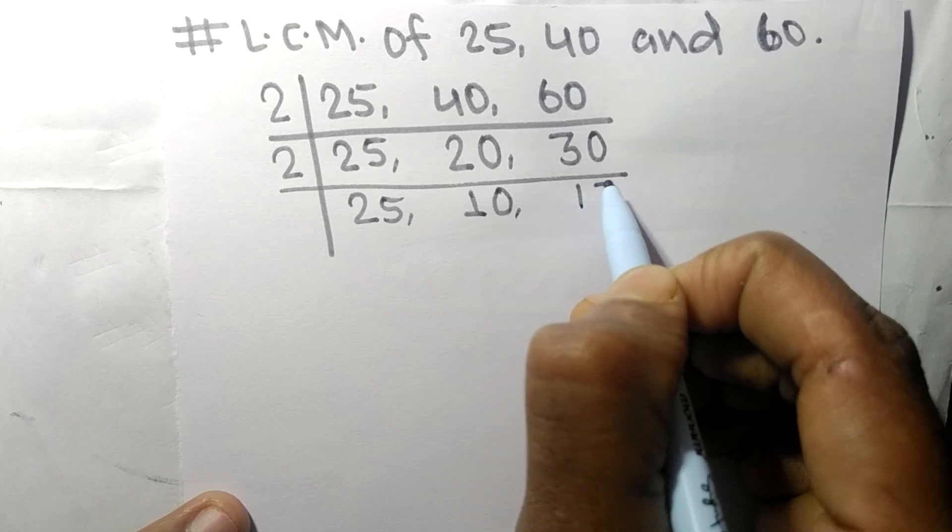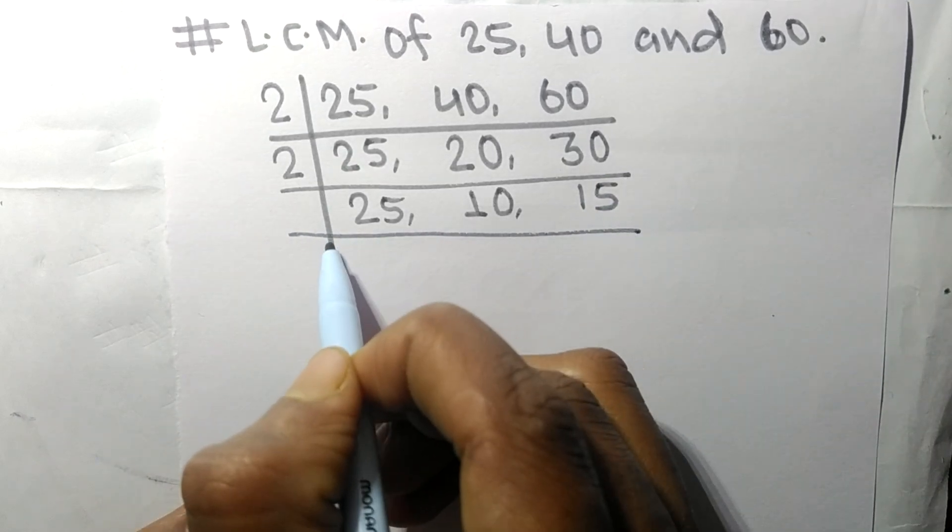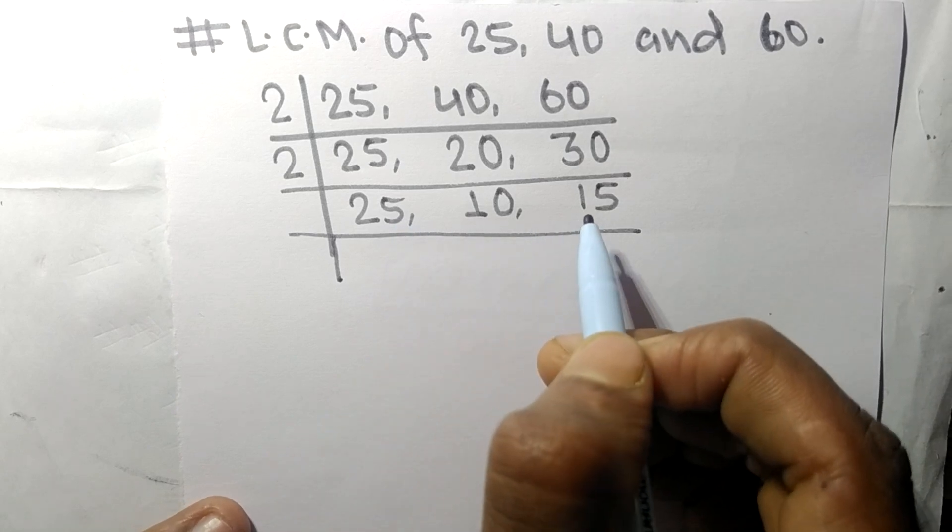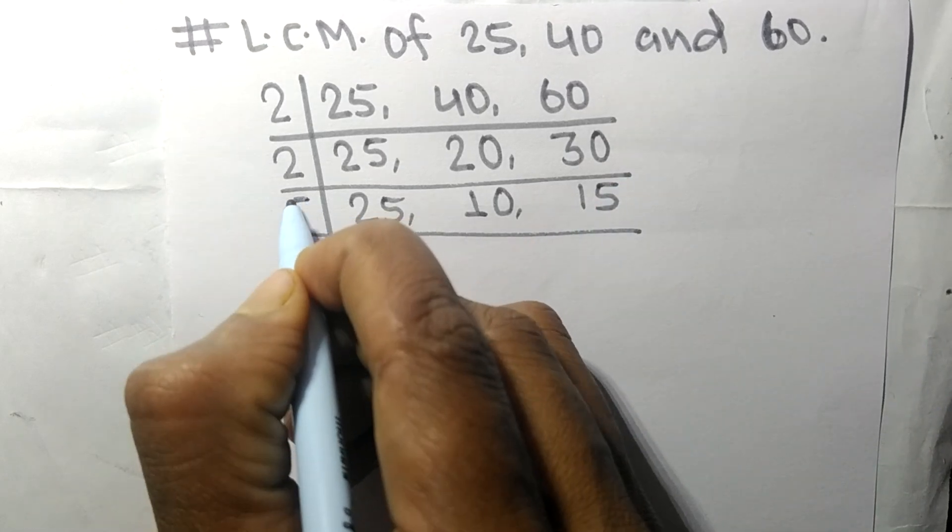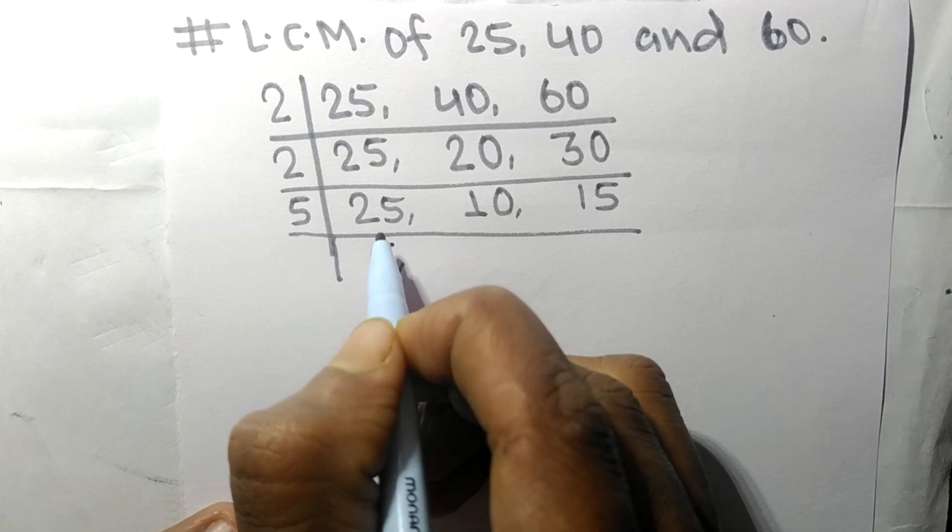So now these all numbers are divisible by 5. So 5 times 5 mean 25, 5 times 2 mean 10, 5 times 3 mean 15.